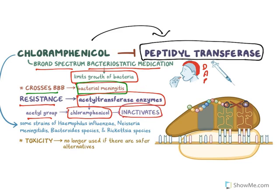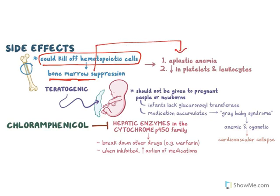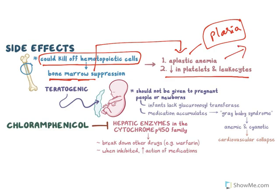Bacteria acquire resistance through the acetyltransferase enzyme, which acetylates chloramphenicol and renders it inactivated. Regarding toxicity: chloramphenicol can kill hematopoietic cells of the bone marrow, resulting in bone marrow suppression. This may result in aplastic anemia and decreases in platelets and leukocytes. Aplastic anemia means no cell multiplication at all, resulting in severe anemia.